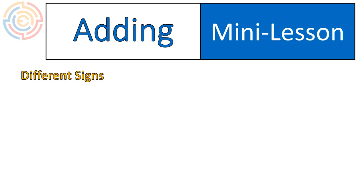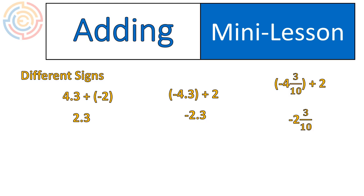Let's look at what happens when we have different signs. In this case, we have 4.3 plus negative 2. That would give us a positive 2.3. If I had negative 4.3 plus 2, I would end up with negative 2.3. And I'm going to show this to you in fraction form as well. Negative 4 and 3 tenths plus 2 gives me negative 2 and 3 tenths. If you look at these three examples, you'll see the pattern of what we're doing.